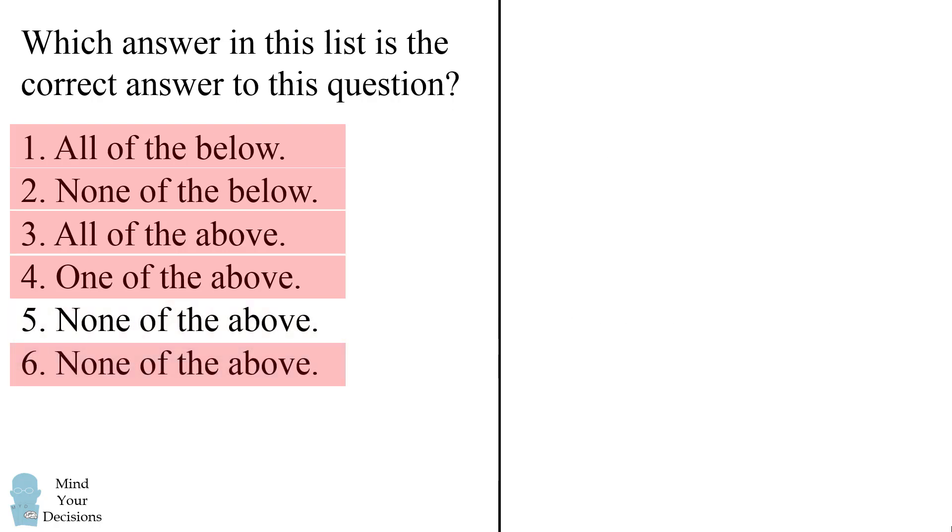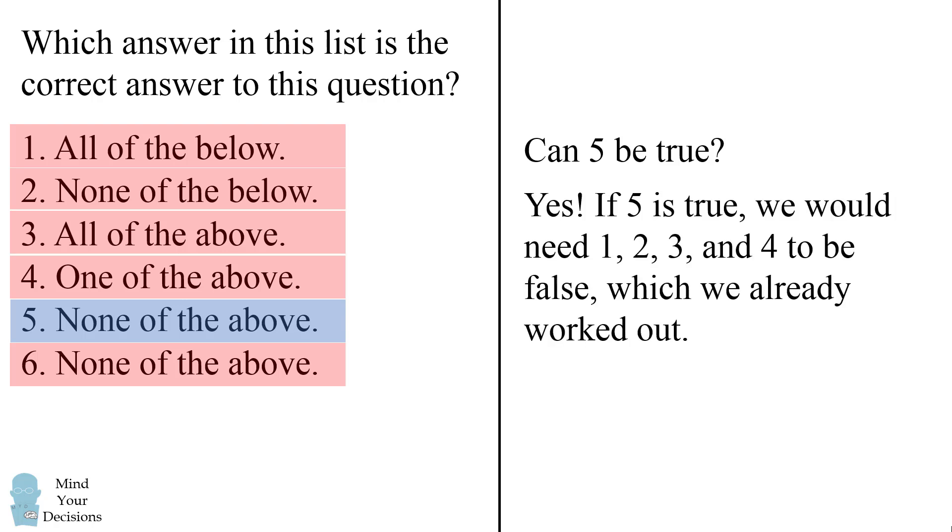So now we are left with statement 5. None of the above. Can 5 be true? Yes, it can. If 5 is true, we would need 1, 2, 3, and 4 to be false, which we already worked out. So there is no contradiction if we have that 5 is a true statement. So the correct answer is 5.